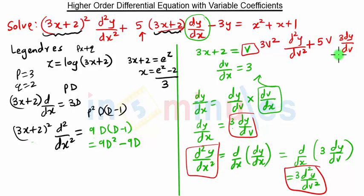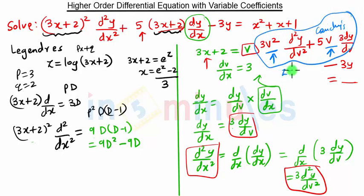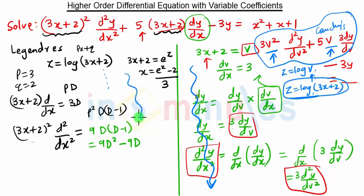And dy by dx is nothing but 3 dy by dv. So this equation now has v squared and v terms — this is nothing but a Cauchy's equation. In Cauchy's equation we substitute z equal to log of x; here instead of x we have v. So in this way we can solve this problem as well. Therefore instead of doing all these steps we can directly substitute z equal to log of 3x plus 2.